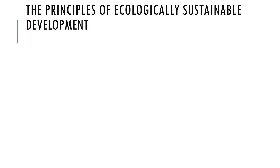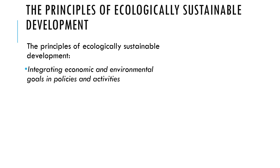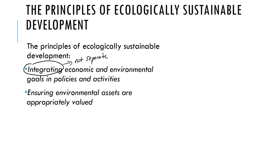If we think about what are the principles, the key points about ecologically sustainable development: the key things we consider are that we integrate economic and environmental goals — the key word here is 'integrate.' Another principle is that environmental assets are appropriately valued. This could be in dollar terms, but it's very hard to truly value environmental assets; the idea is that they are protected.